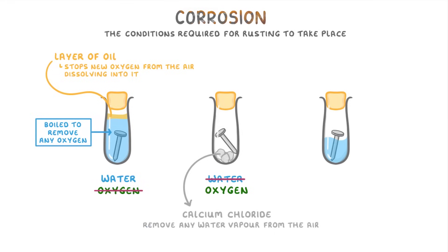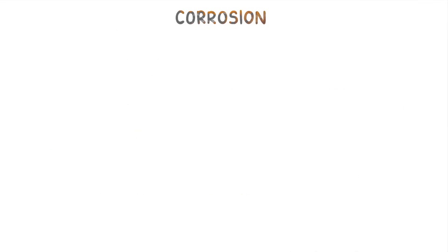The final test tube contains both air — so oxygen — and water. If we left these test tubes for a while, only the nail in the last tube would rust, because it's the only one that contains both oxygen and water.